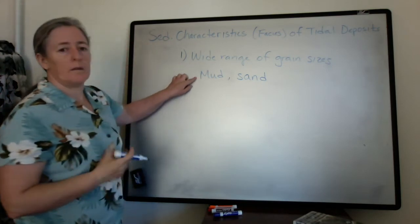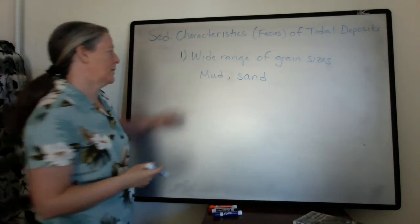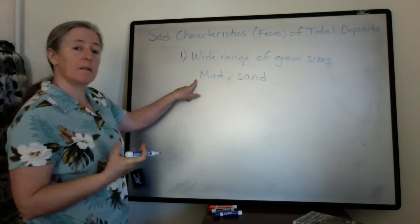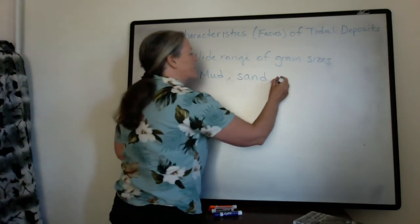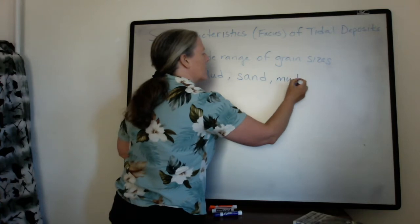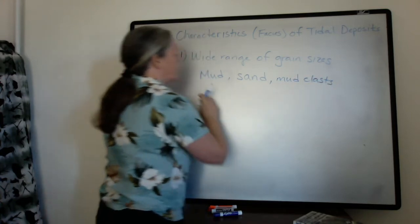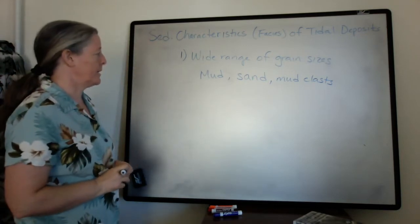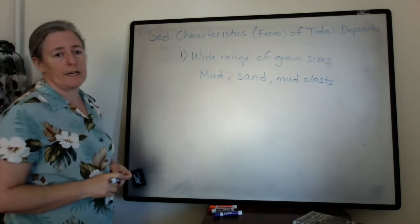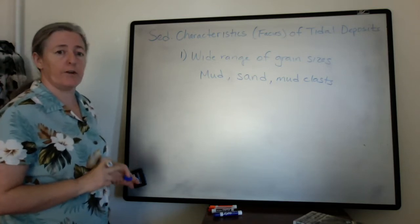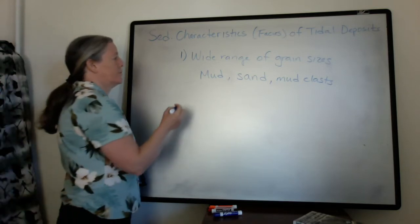And because the mud can become consolidated, you can end up with mud clasts. And those mud clasts are ripped up from the local environment. And of course larger grains can be deposited in tides if you have a high enough flow and a source of those large grains.